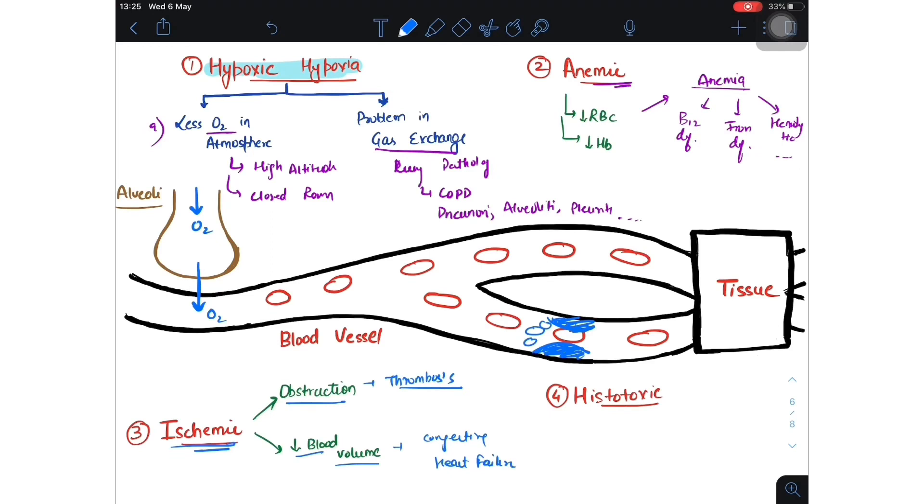Next one is histotoxic. Here everything is normal: O2 is coming in, O2 is diffusing, RBC is normal, and O2 is going into the tissue. But the problem here lies in the tissue. The tissue will not be able to utilize that O2, and it can be if there is cyanide poisoning.